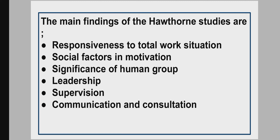The most significant discovery of the Hawthorne experiment was the extent of informal organizations in all organizations. Informal relations have a stronger influence than formal relationships. Elton Mayo advocated a change in leadership style; a leader must recognize the significance of group work and understand the feelings and sentiments implied from the behavior of employees. Mayo also observed that workers would work more productively under a friendly, cooperative, and relaxed supervisor than an authoritative one.